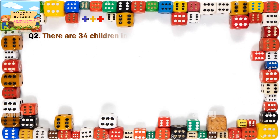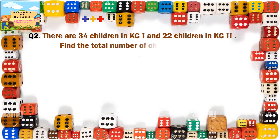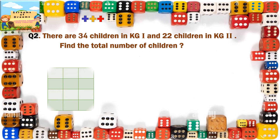Let's see some more questions. There are 34 children in KG1 and 22 children in KG2. Find the total number of children. So let's begin doing it.